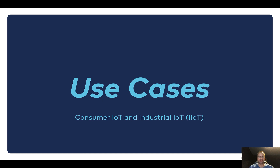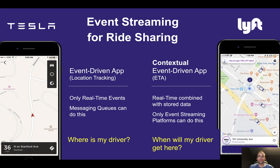Let's begin with the use cases. The first example is Lyft, one of the ride-sharing applications in the US, similar to Uber. Both Uber and Lyft use Apache Kafka and event streaming heavily because the huge requirements are that you need to connect to millions of devices — the drivers and the customers — and correlate that data in real time. You need to calculate things like the estimated time of arrival of the driver, the estimated time to your final destination, the estimated price, and many other correlations like payment and fraud.